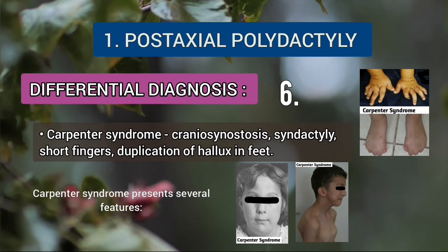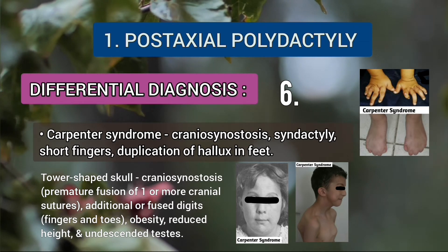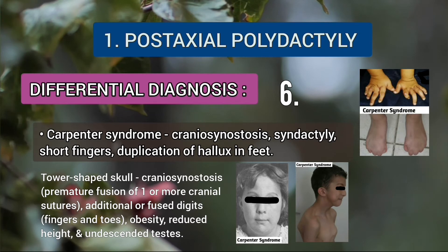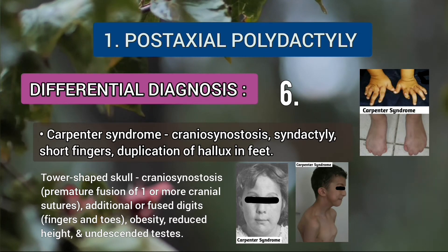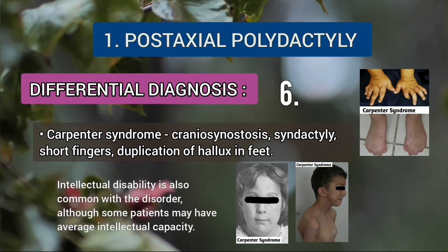Carpenter syndrome presents several features, including a tower-shaped skull due to craniosynostosis, which is the premature fusion of one or more cranial sutures. Other features include polydactyly or syndactyly present in fingers and toes, obesity, reduced height, undescended testis, and intellectual disability, although some patients may have average intellectual capacity.